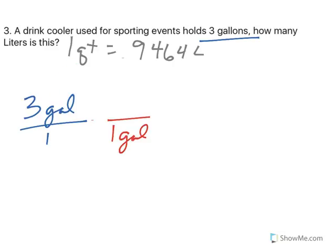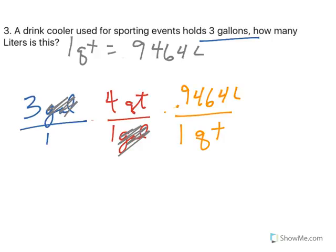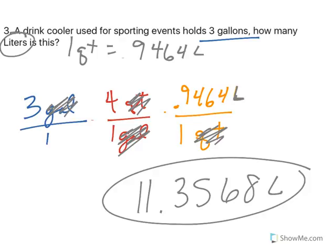So, 1 gallon is 4 quarts. So, that conversion right there makes your gallons go away. Then you can use the 1 quart is .9464 liters. Don't lose your decimal like I almost did there. So, that makes my quarts go away. Now, I'm in liters just like my problem asks. So, I multiply across the top, and I have 11.3568 liters. And you could round that if you like. But hopefully that was some good practice on the three different types of conversions we did in this section.